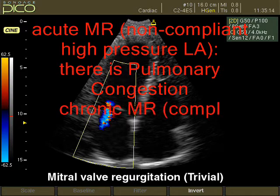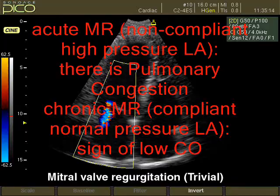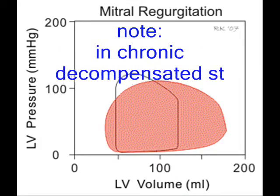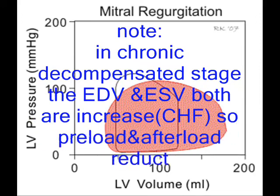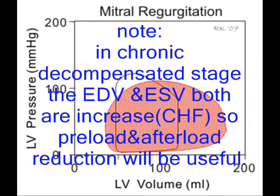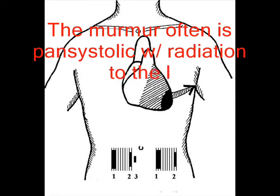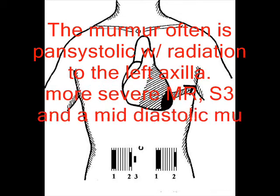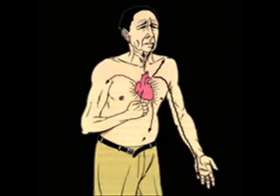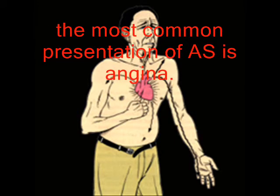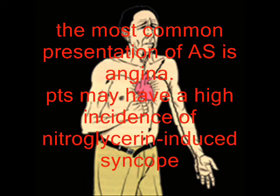Mitral regurgitation may present acutely with pulmonary congestion, or the chronic form gives signs of low cardiac output. In the chronic decompensatory stage, both EDV and ESV are increased, and preload and afterload reduction will be useful for the patient. The murmur is often pansystolic with radiation to the left axilla, and with severe MR, an S3 will be appreciated.